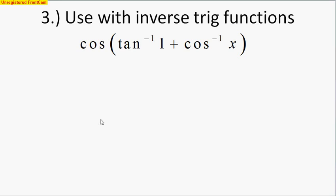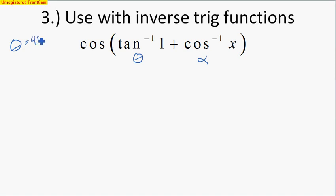We could also use these ideas with inverse trig functions — this is a tricky problem but manageable if you recall what we learned. Remember: inverse functions are nothing more than angles. So the tangent inverse expression is angle theta, and the cosine inverse expression is another angle we'll call alpha. Tangent inverse of 1 — where on the unit circle is tangent equal to 1? That's 45 degrees. So theta is 45 degrees.